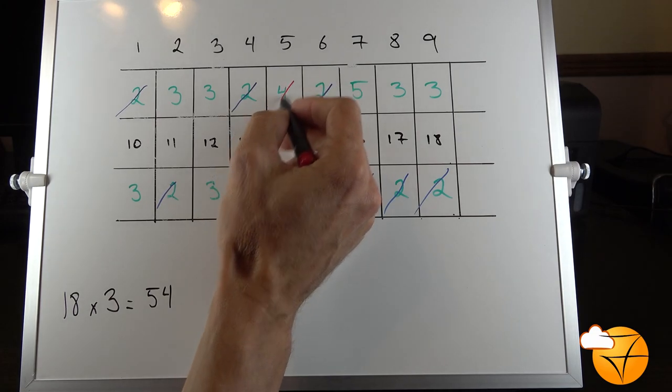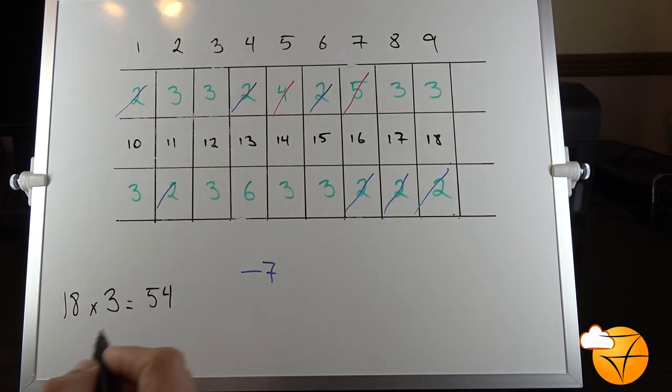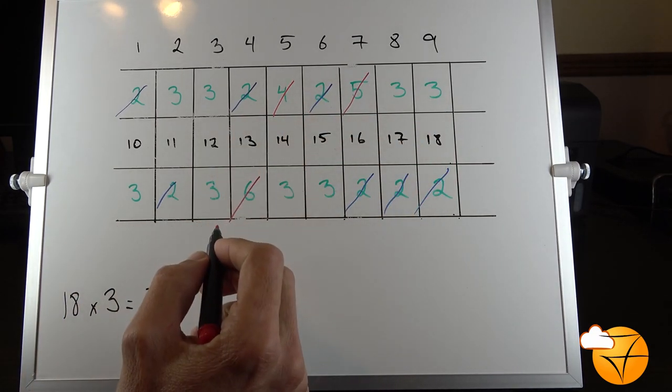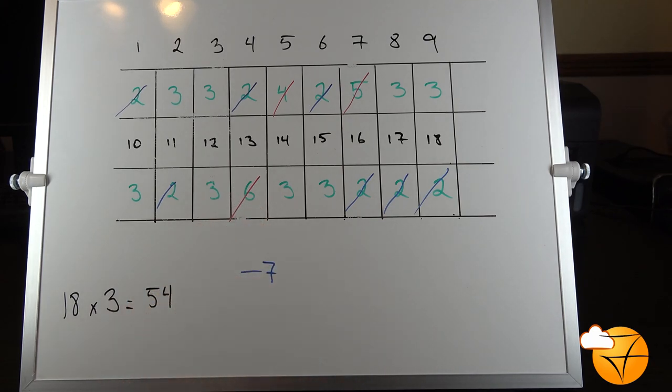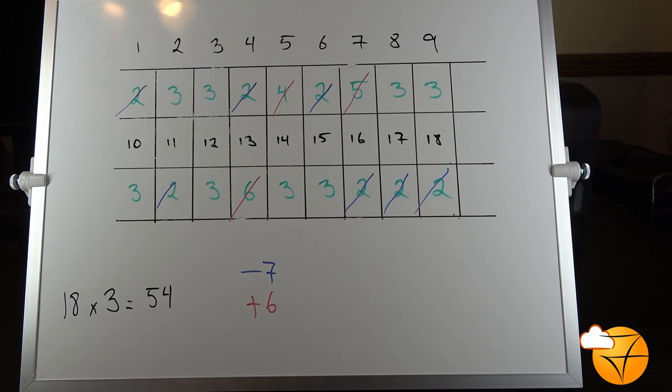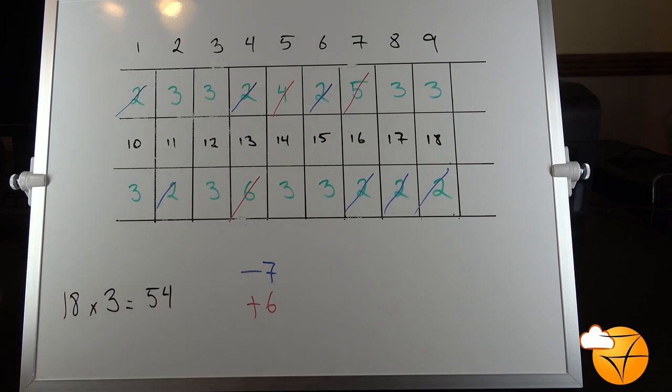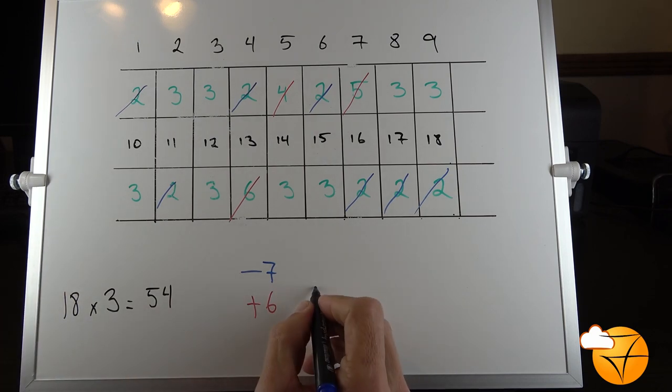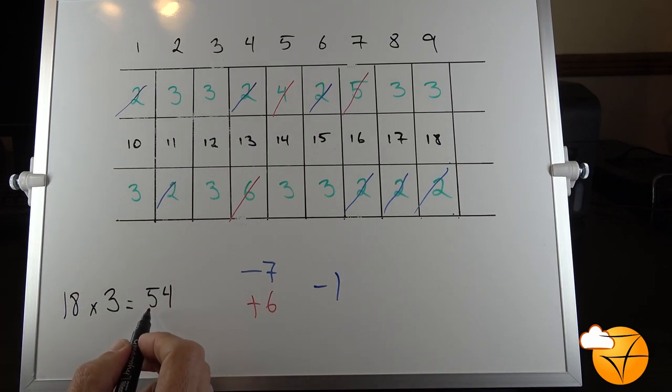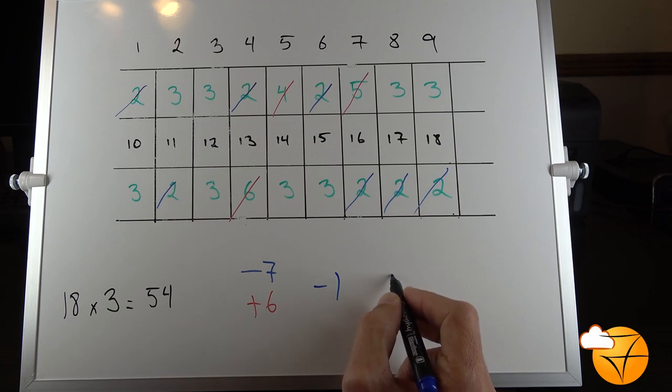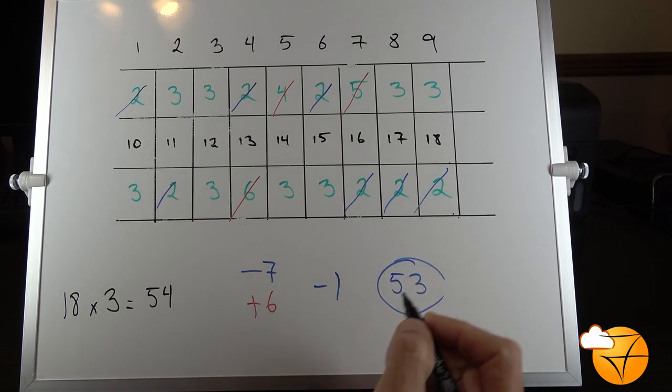Take the difference here and it is minus one. Minus one from 54 is 53—that's our score. That's how you do it. It's that simple, that quick.